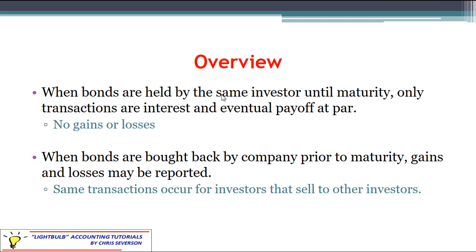If a bond were held by the same investor until the maturity date, then the only thing you would have at that final transaction is a debit to bonds payable to reduce it for the full face value and a credit to cash for the same amount. There would be no gain or loss recorded — everything went as it was intended. However, when bonds are either bought back by the company or bought and sold from other investors, you may have gains and losses to report. Specifically, we're talking about when the company buys the bond back prior to maturity.